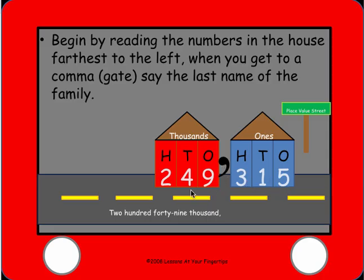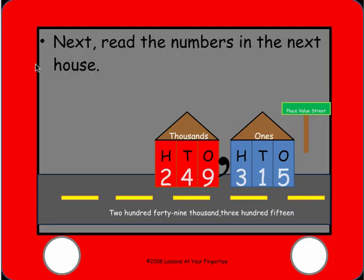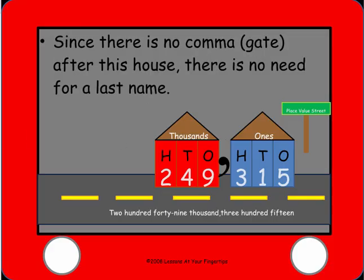When that gate is up — that comma — you say the number, then the name of the family: two hundred forty-nine thousand three hundred fifteen. So we read the thousands house first and then the ones house. Since there's no gate or comma after the ones house, you don't say the last name of that house.